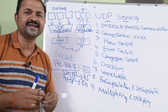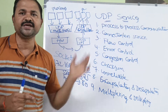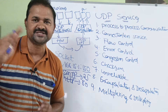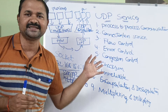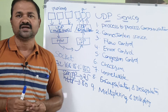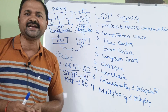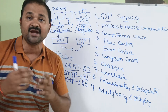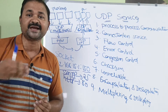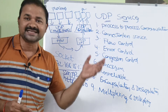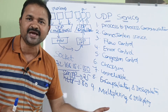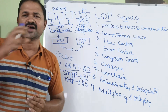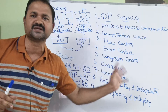The fourth one is error control. UDP doesn't provide any error control mechanism. After the sender sends the data, there is a possibility that a packet may be lost or it may be corrupted, or the same packet may be retransmitted by the sender one more time. There are no error control mechanisms here.